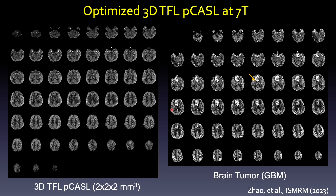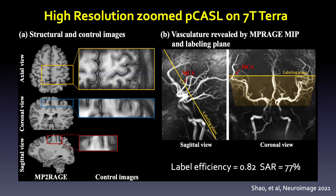Recently, we have also optimized the 3D turbo flash RARE to achieve isotropic 2×2×2 mm resolution for whole brain distortion-free perfusion images at 7T. You can apply this technique clinically — for example, this is a relatively large GBM case. You can see the heterogeneous flow, with hyper- and hypoperfusion throughout the tumor region.